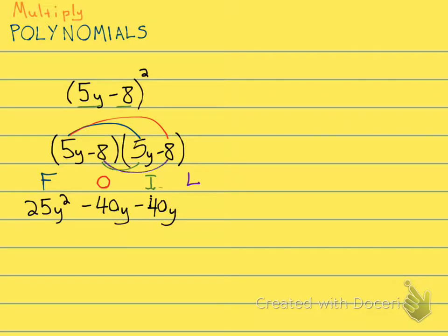And then the last two, negative 8 times negative 8 is plus 64. After we distribute, we always look to combine like terms. And in this case, the middle two terms will go together.